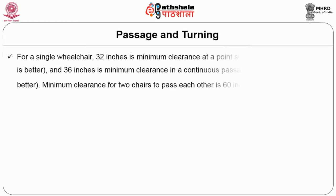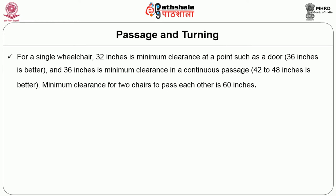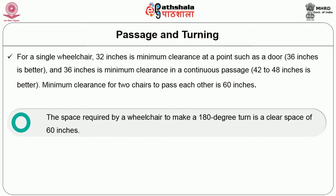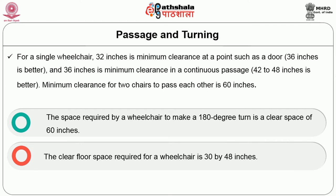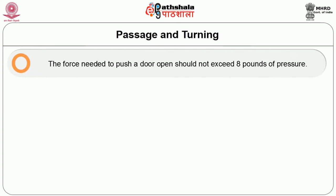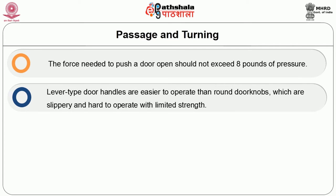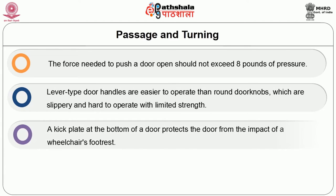Passage and turning: For a single wheelchair, 32 inches is the minimum clearance at a point such as a door; 36 inches is better, and 36 inches is the minimum clearance in a continuous passage — 42 to 48 inches is better. Minimum clearance for two chairs to pass each other is 60 inches. The space required for a wheelchair to make a 180-degree turn is a clear space of 60 inches. The clear floor space required for a wheelchair is 30 by 48 inches. The force needed to push a door open should not exceed 8 pounds of pressure. Lever-type door handles are easier to operate than round door knobs. A kick plate at the bottom of the door protects the door from the impact of a wheelchair's footrest.